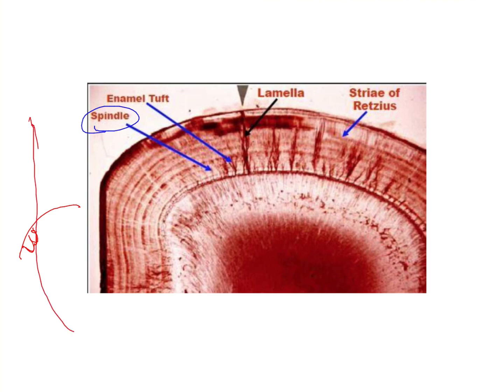they form what is called an odontoblastic process. Sometimes the odontoblastic process goes and gets embedded into the enamel. When it gets embedded into the enamel, the structure appears like this within the enamel. This is called an enamel spindle. So an enamel spindle is nothing but the odontoblastic process or the terminal portion of the odontoblast which is present in the enamel.